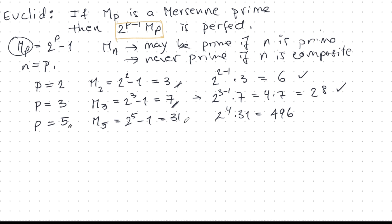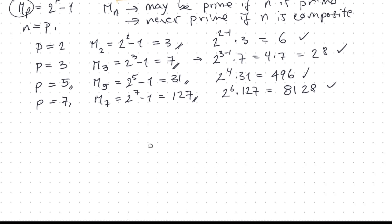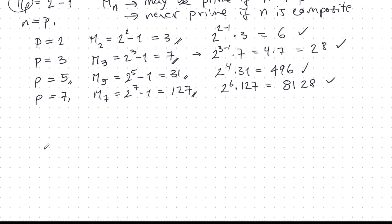Next, p is 5. That leads to a Mersenne prime of 31. So I should get a perfect number. And indeed, this is perfect. This one was known to Euclid. p is 7 gives me a Mersenne number 127, that is prime. And so this number here is perfect, 8,128. Probably also known to the ancients.